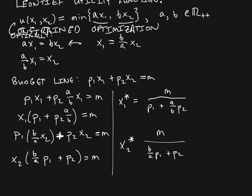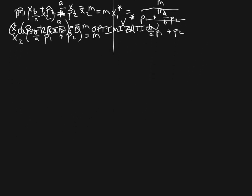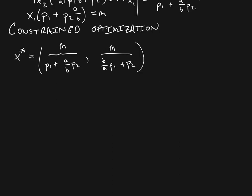So the optimal consumption bundle X star has X1 star equal to M over (P1 plus A over B times P2), and X2 star equal to M over (B over A times P1 plus P2). That is the consumer's optimal bundle in the case of Leontief preferences.